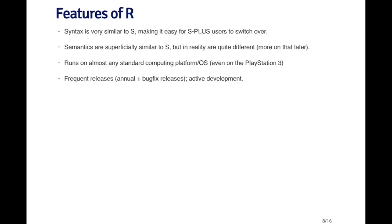Some features of R: the syntax is very similar to S, which made it easy for S-Plus users to switch over, though this is less relevant today as most people go to R directly. The semantics are superficially similar to S but in reality are quite different — we'll talk more about this in a future lecture. R runs on pretty much any standard computing platform or operating system: Mac, Windows, Linux, even on your PlayStation 3. There are frequent releases — annual major releases and often bug-fix releases in between, so there's very active development going on.